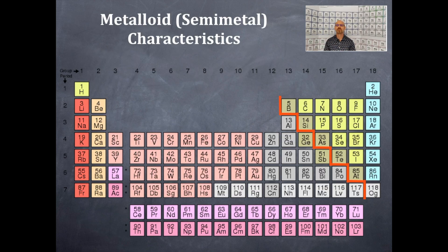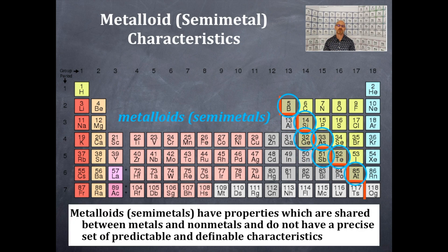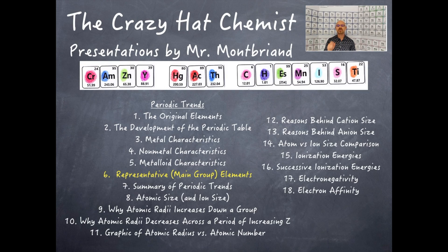So representative or main group elements. This is that orange staircase line, remember that? These are the representative or the main group elements that I've highlighted here.